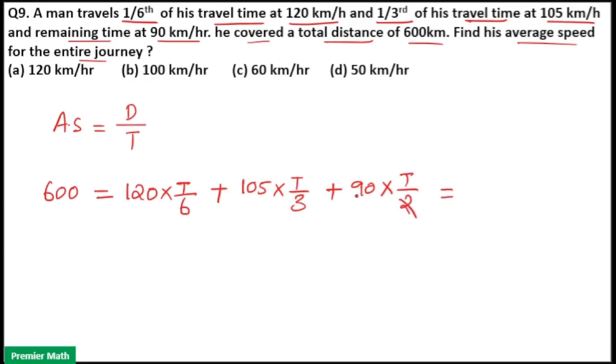So this is 2 into 45, 90. 3 into 35, 105. 6 into 20, 120. 20 plus 35 plus 45 is 100. So this is 600 equals 100T.